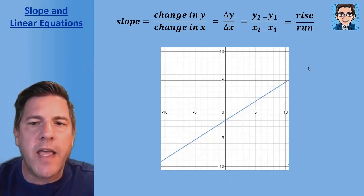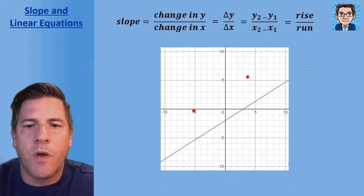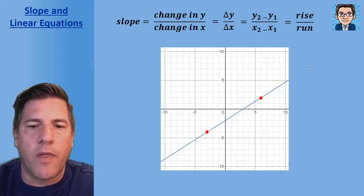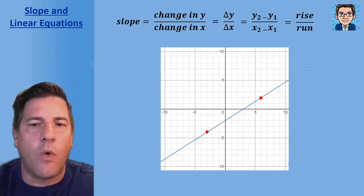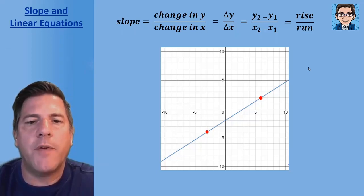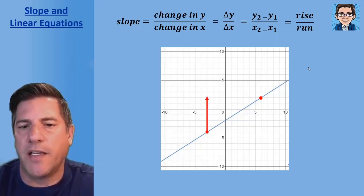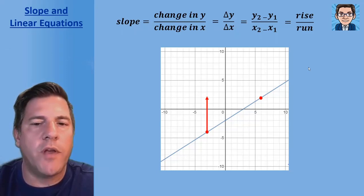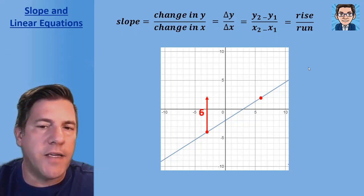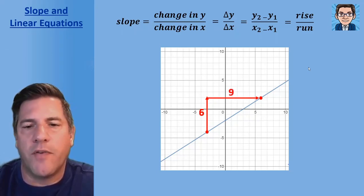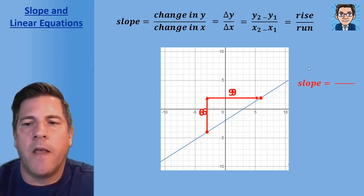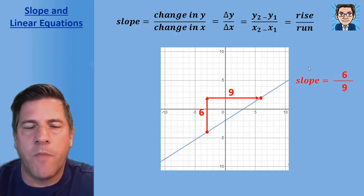To find slope from a graph, take two points where the line crosses at whole numbers. Then see how much y changes — the rise. To go from one point to the other, we go up by six, and then over by nine. So the rise over the run is six over nine, which reduces to two-thirds.